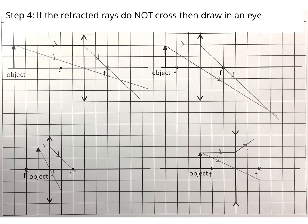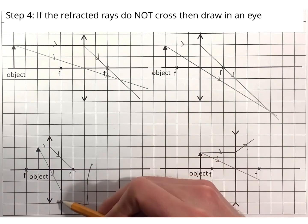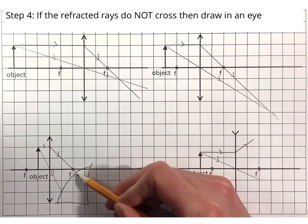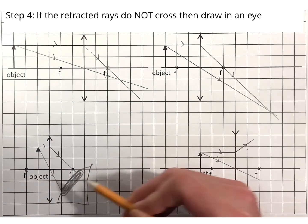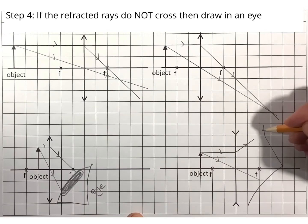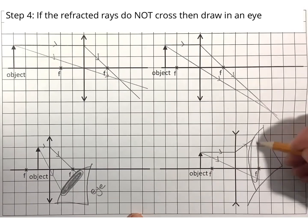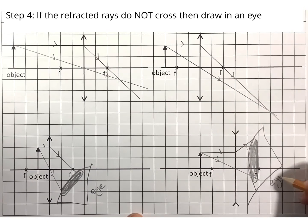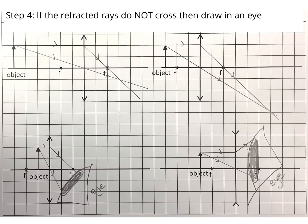Next, check whether the refracted rays cross or not. On the first two diagrams they cross, so we don't have to do step four. But on the bottom two, the rays don't cross, and therefore we have to draw in an eye. This tells us we're going to get virtual images.